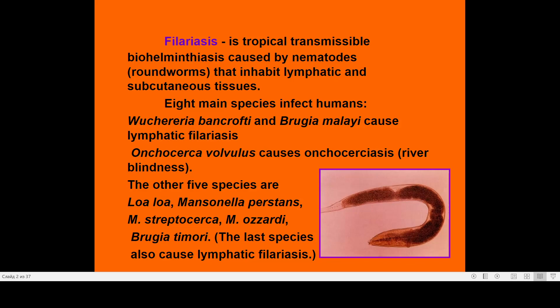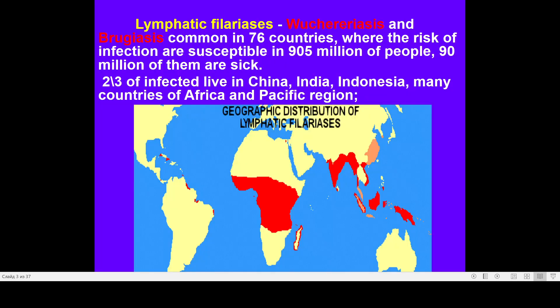For this kind of ailment, possible developments include elephantiasis, lymphatic complications, and development of blindness. Lymphatic filariasis — Wuchereria and Brugia — is present in 76 countries, and more than 1 billion people live in territories at risk. Around 90 million people are sick, and two-thirds of them live in China, India, Indonesia, and some countries of Africa and the Pacific region.